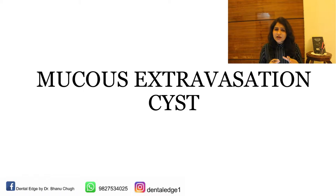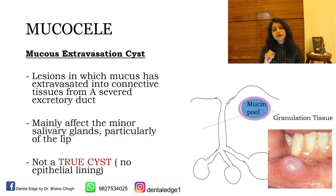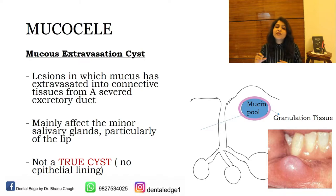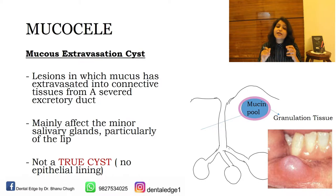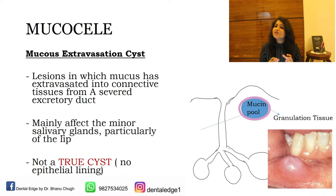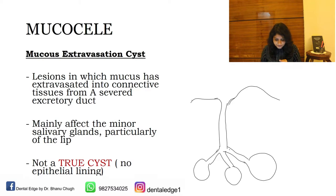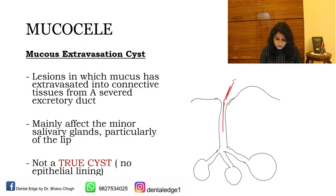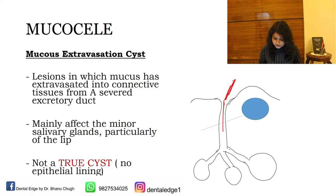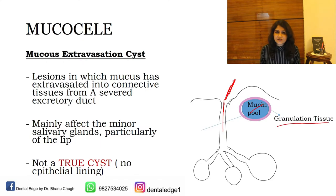A mucus extravasation cyst occurs when there is a break in the salivary gland duct. The saliva, instead of going into the oral cavity, pools in the connective tissue. Due to this pooling of saliva there is an inflammatory reaction, and a granulation tissue is formed around the pooled saliva, leading to formation of the mucus extravasation cyst. As you can see on screen, normally saliva goes into the oral cavity, but due to the break in the duct, mucus pools and granulation tissue forms around it.